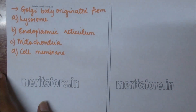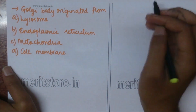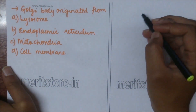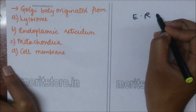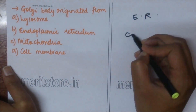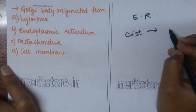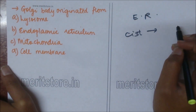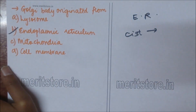Golgi body originates from: A) lysosome, B) endoplasmic reticulum, C) mitochondria, D) cell membrane. Formation of new Golgi body is always from the endoplasmic reticulum. Cisternae are similar in both. So option B is the correct answer.